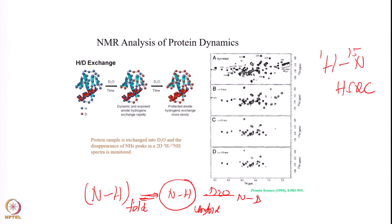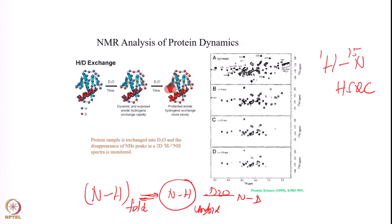Local folding-unfolding events continuously keep happening, although the protein is not totally unfolded — it is still a folded protein. But there are local dynamic changes happening. The dynamic changes that happen inside make the proton accessible to the D2O, which can actually penetrate this protein structure, and then the exchange process starts.